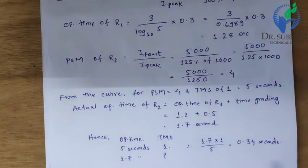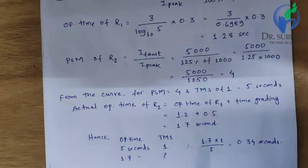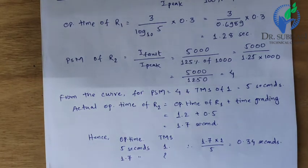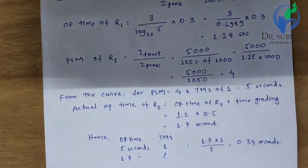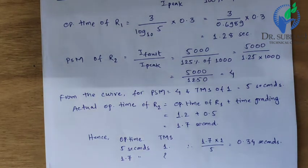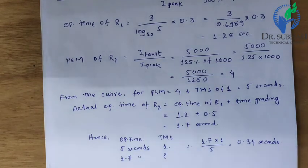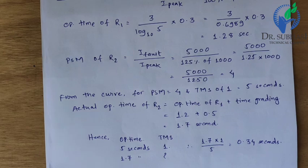In conclusion, R1 operating time is 1.28 seconds. After adding the discrimination time grading of 0.5 seconds, R2 must operate at 1.7 seconds total, requiring a TMS of 0.34 for R2. Thanks everyone.